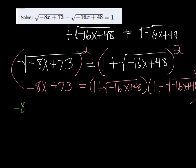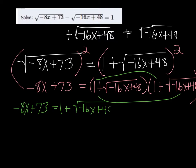So the negative 8x plus 73 is just going to come down. And here we foil. So 1 times 1, just 1. 1 times the square root of negative 16x plus 48 is just going to be itself.